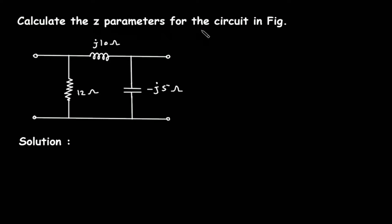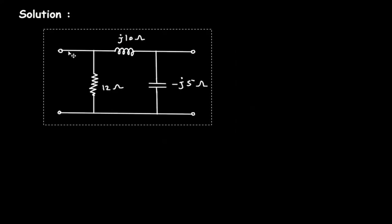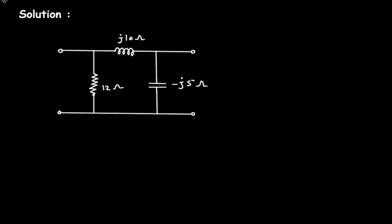Calculate the Z parameters for the circuit in figure. As we can see, it is a pi network, so first we have to convert this pi network into its equivalent T network, after that we can easily find the Z parameters. So to convert this pi network to T network,